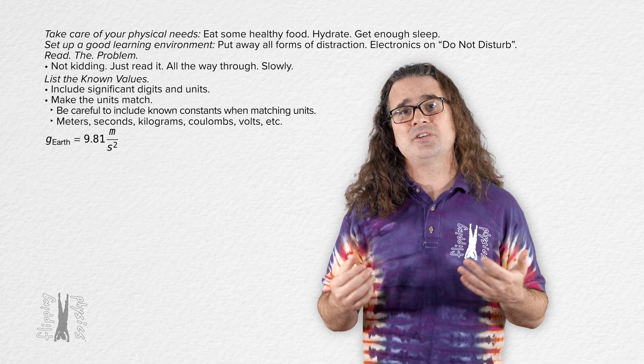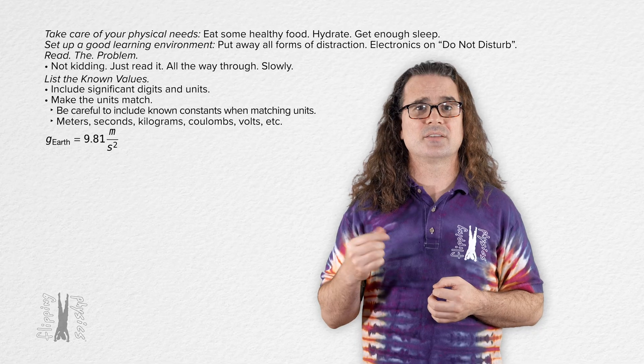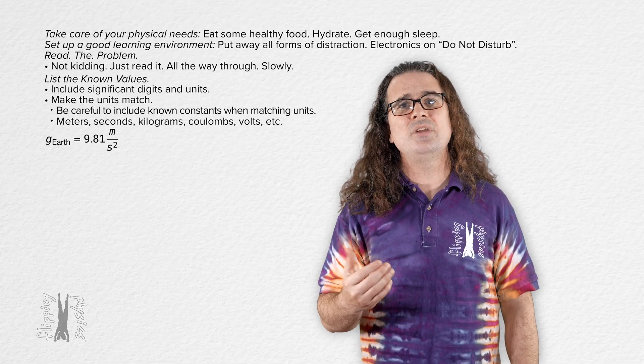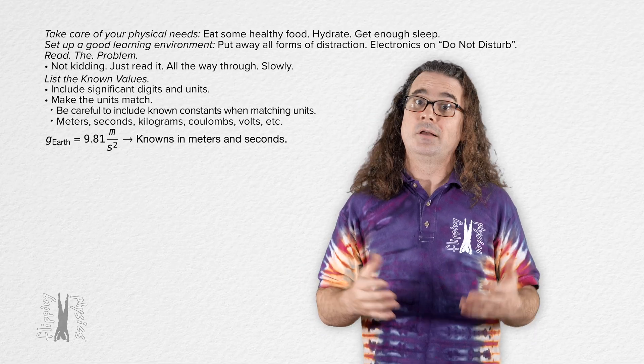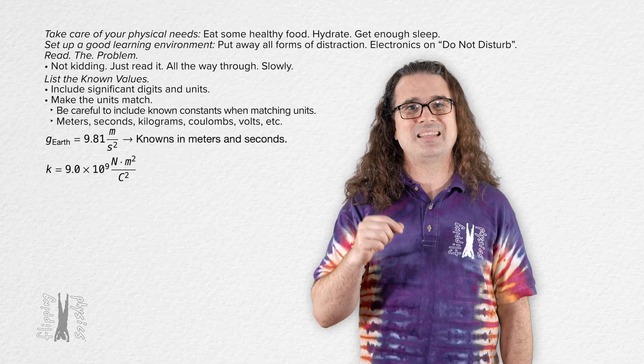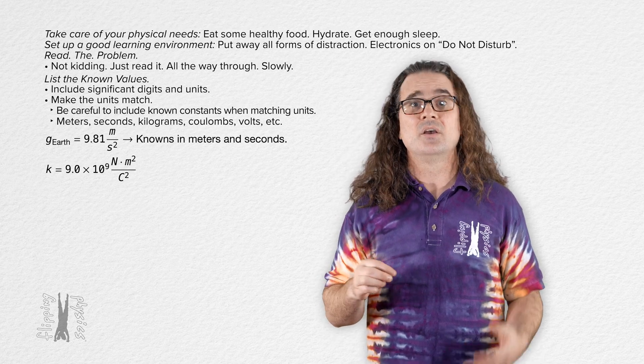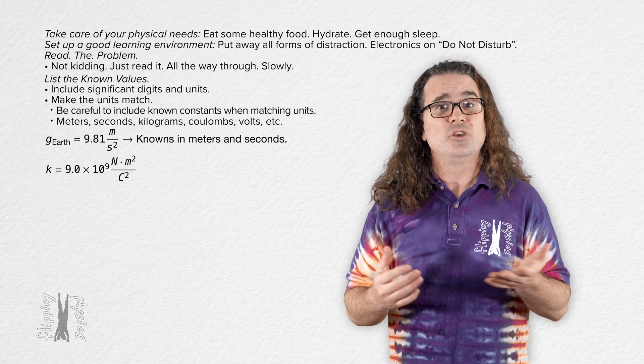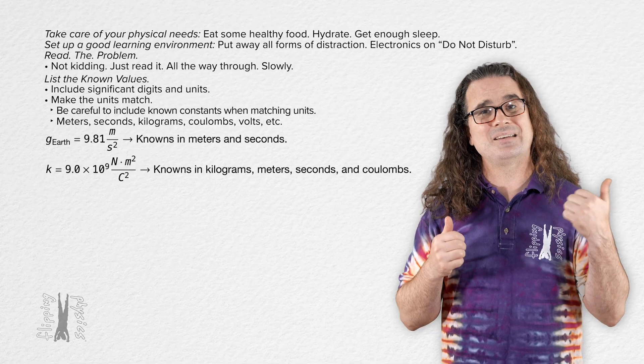For example, the gravitational field strength here on Earth is often given as 9.81 meters per second squared. So, if you are using that value somewhere in your problem, you need to make sure all of your known values are in meters and seconds. The Coulomb constant is 9.0 times 10 to the 9th newtons times meters squared over Coulomb squared. So, if you are using an equation which has the Coulomb constant in it, you need to make sure all of your knowns are in kilograms, meters, seconds, and coulombs.